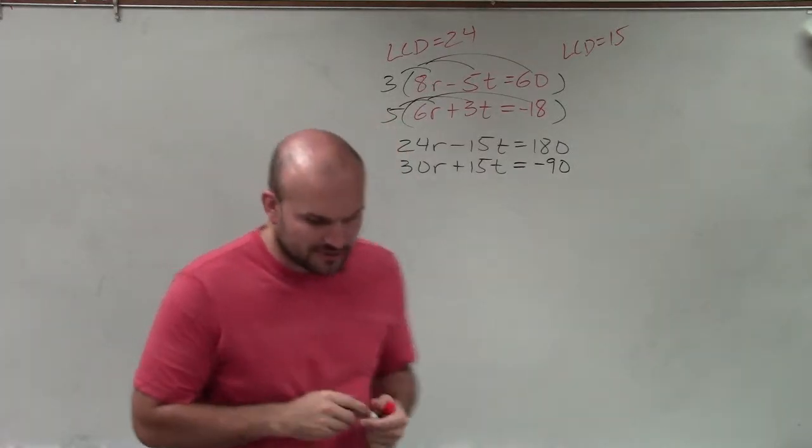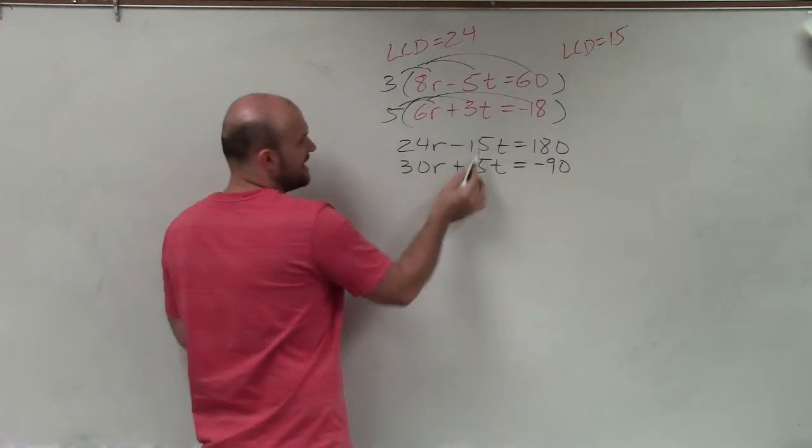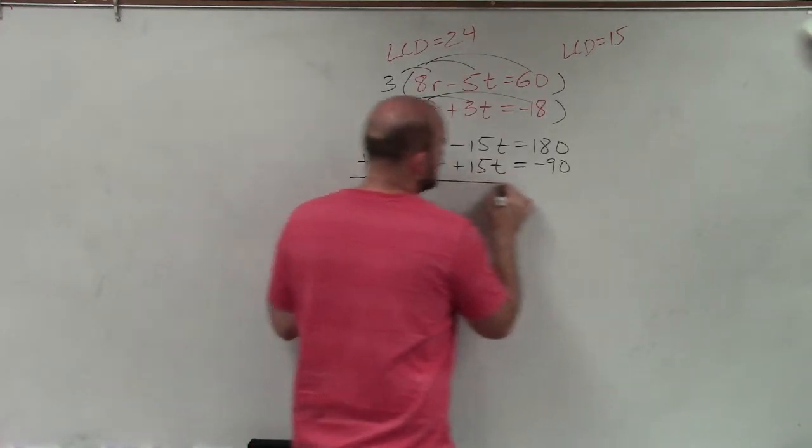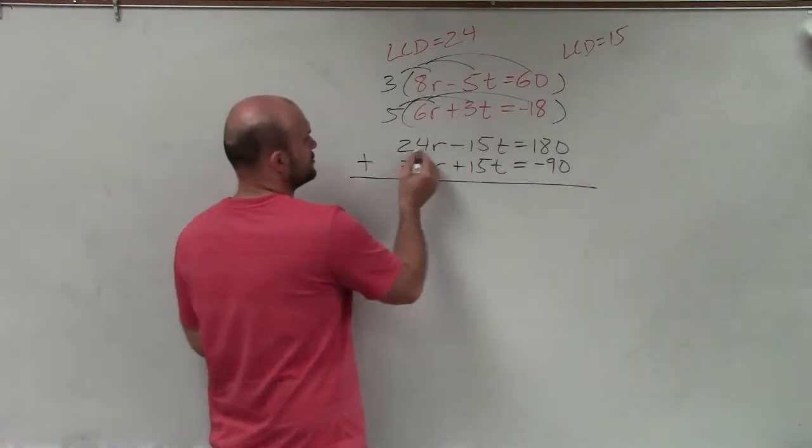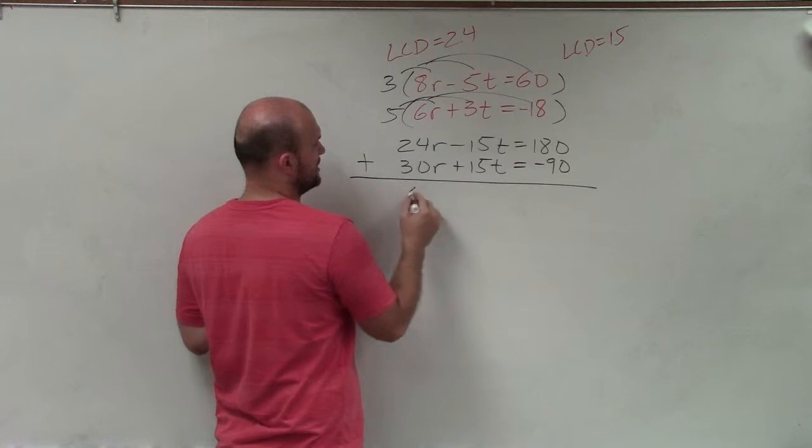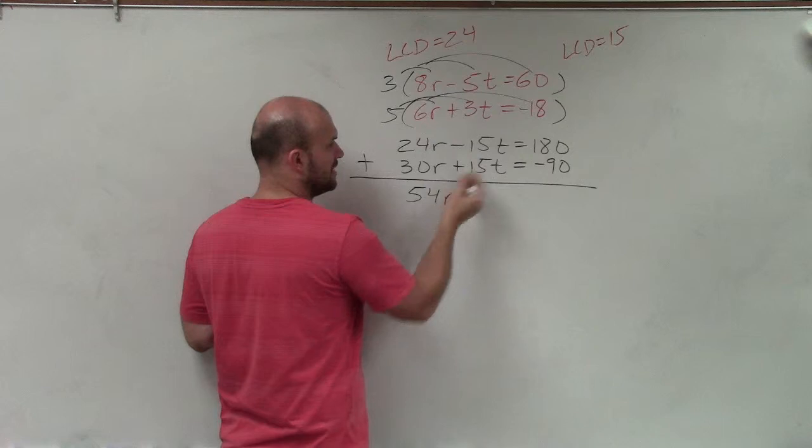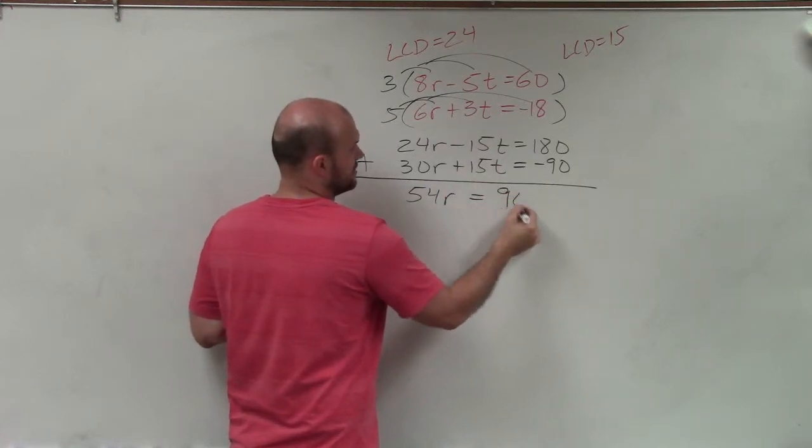So now, as you notice, as I multiply to get my LCDs the same, you can see that now, since I have 15, one is negative, one is positive. So when you have that case, when it happens that way, just simply add the two equations up together. So 24r plus 30r is 54r. Negative 15 plus 15 is just going to be 0, which is just 0. So that equals 90.